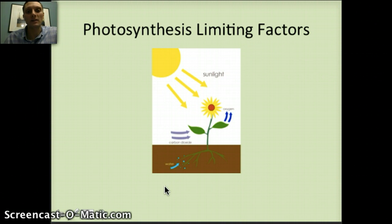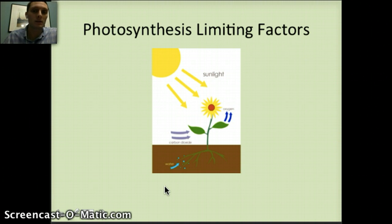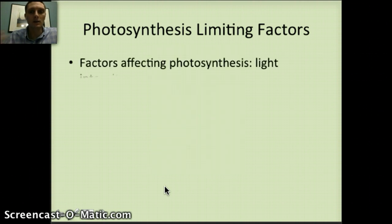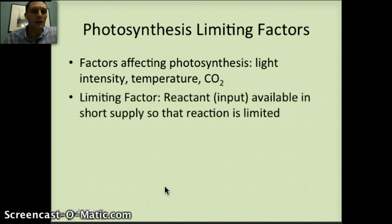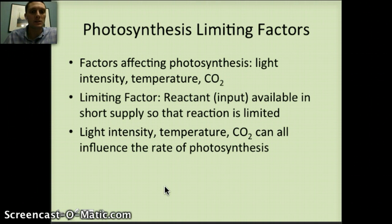To finish our discussion of photosynthesis, we want to look at limiting factors — things that could limit the overall rate or effectiveness of photosynthesis. What is necessary for photosynthesis? Sunlight is one of the most important, carbon dioxide is essential especially for the Calvin cycle, and water is needed primarily to drive the electron transport chain. Limiting factors include light intensity, temperature, and CO2. A limiting factor is a reactant or input available in short supply that limits the reaction rate. If there's not enough light, not enough CO2, or if the temperature is too high or too low, these can all limit the rate of photosynthesis.